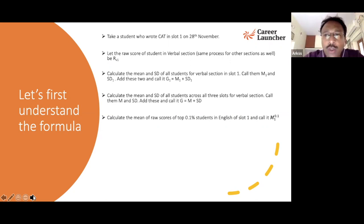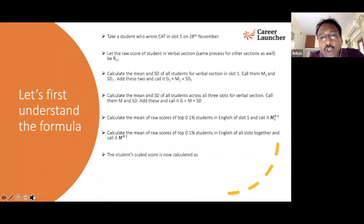Then they say, hey, the top 0.1% of the students, 99.9 percentile plus guys in the same section in English of slot one, they calculate again the mean of the raw scores. Call it M1, and this is only for the 0.1%. Similarly, for slot one, we also calculate the mean of the raw scores for all the slots together. Now for the slot that you've written, there is a mean, there is a standard deviation. For all the three slots put together, there is a mean and there is a standard deviation. In addition, there is also a mean of the 0.1% or the 99.9 plus percentile students, the absolutely top 0.1 percentile students, the mean score.